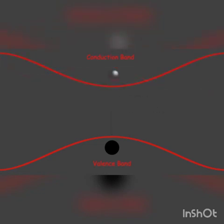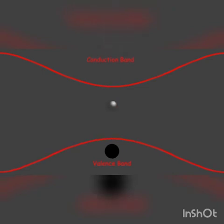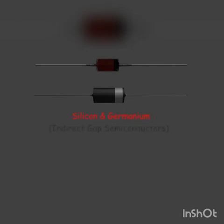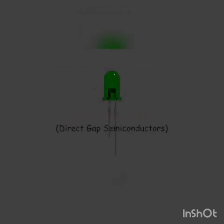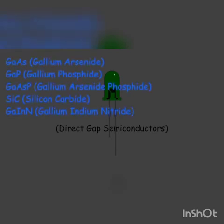In a direct gap semiconductor, the maximum of the valence band and minimum of the conduction band occur at the same electron momentum. Hence, there will be no change of momentum of electrons during migration from conduction band to valence band, so the photons do not need to provide momentum to electrons. Unlike normal diodes made from germanium or silicon, which are indirect gap semiconductor materials, light emitting diodes are made from direct gap semiconductors — compounds such as gallium arsenide, gallium phosphide, silicon carbide, and gallium indium nitride. They may also be mixed together at different ratios to produce more distinct wavelengths of colors. This is how an LED works.